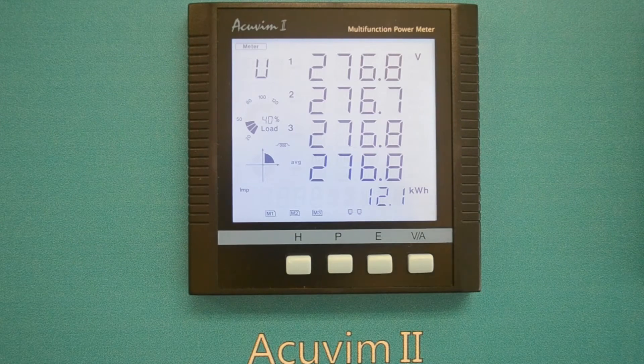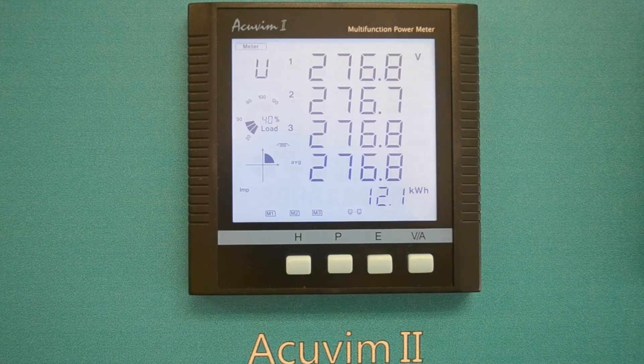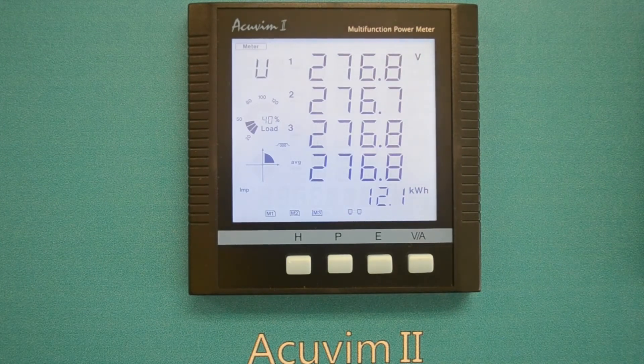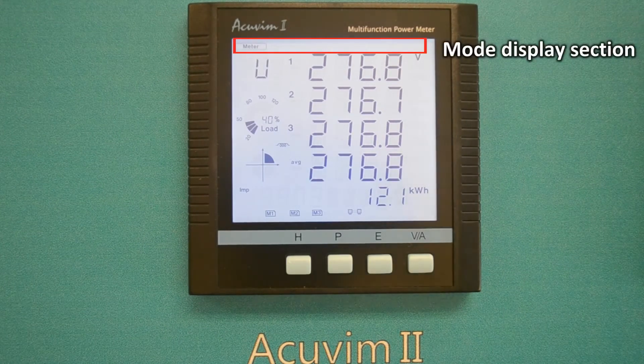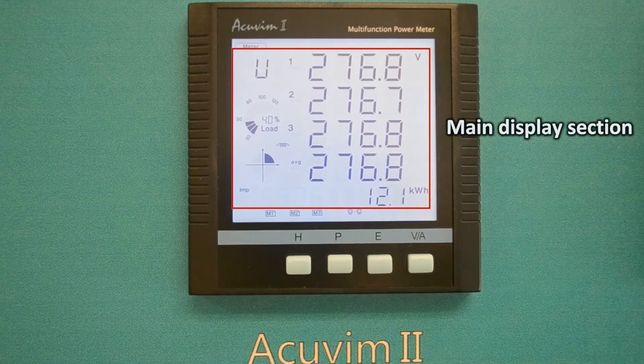First of all, we need to familiarize ourselves with the LCD screen itself. The screen is divided into three display sections which are mode display, main display, and indicator display.